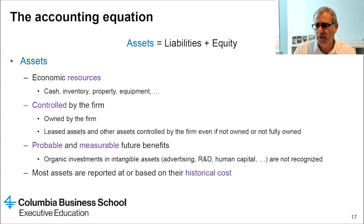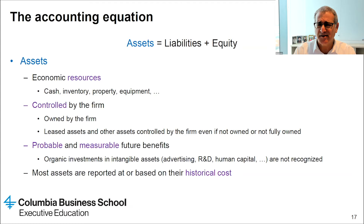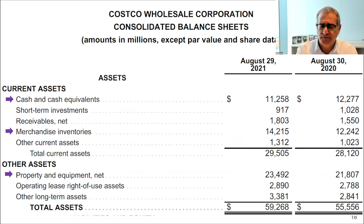Another issue with the balance sheet is that assets are reported based on their historical cost, and simply because of inflation — which is going up again — this means that what we report on the balance sheet could potentially understate the true value by a lot. For Costco, the most significant assets are property and equipment, inventory, and cash.